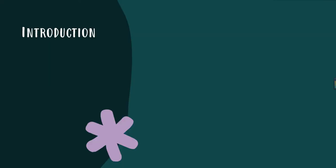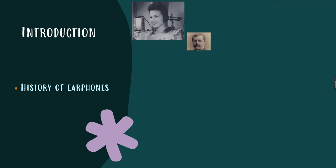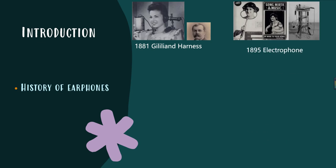Do you know when people started using earphones? In fact, the earliest products with the concept of earphones started in 1881. Ezra Gilliland invented a device to tie the speaker and microphone to the shoulder, which was mainly used for telephone operators in the 19th century, not for listening to music. Then in 1895, the Electrophone Home Music Listening System used telephone lines to relay live music performances to home earphones, which was close to the prototype of modern earphones.